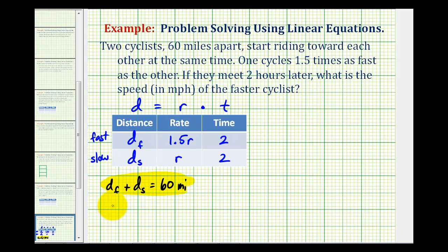and that d_f is going to be equal to the rate times the time, or 1.5r times 2, which should be 3 times r, or 3r, and d_s is equal to r times 2, which is just 2r.